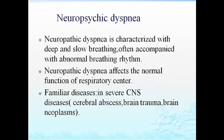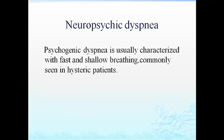Neuropsychogenic dyspnea is characterized by deep and slow breathing, often accompanied with abnormal breathing rhythm. Neuropathic dyspnea results from disruption of normal respiratory center function in CNS diseases such as cerebral abscess, brain trauma, or brain neoplasm. Psychogenic dyspnea is characterized by fast and shallow breathing, commonly seen in hysterical patients.